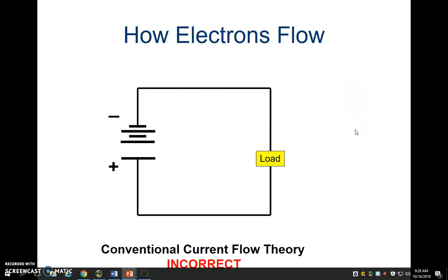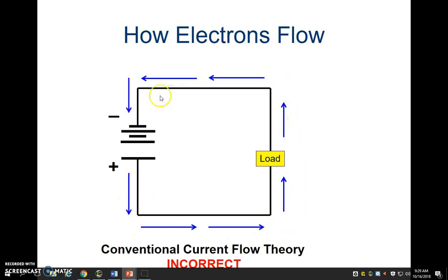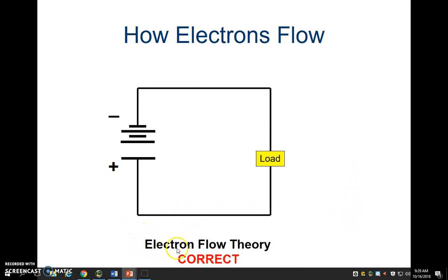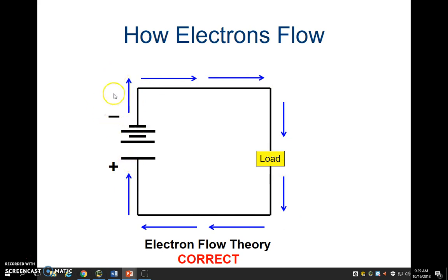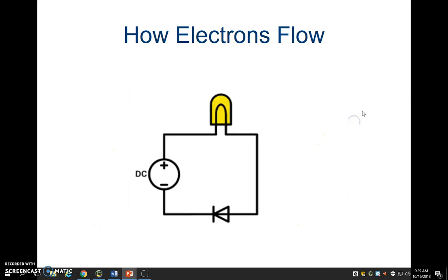The last thing we're going to talk about is how electrons flow. There are two different theories. One is proven to be incorrect, the other is correct — there's still some controversy to this day. We originally thought that electrons flowed out of a battery from positive to negative — it turns out this is incorrect. That was called conventional current flow theory: positive to negative is incorrect. We now know that electron flow theory — electrons flowing from negative to positive — is correct. You need to know that name, electron flow theory, and that negative to positive is correct. Write that down and you are done for the day.